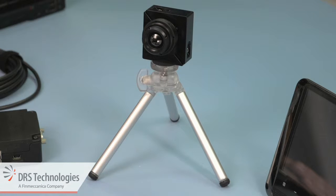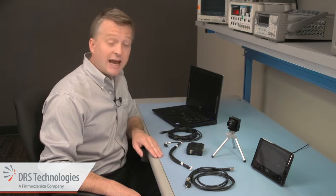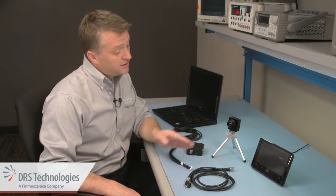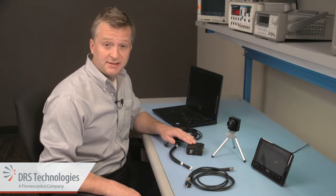We've mounted this Tamarisk 320 to a standard tripod. You'll also need a mini USB to USB cable, a camera interface cable, a coaxial cable, a monitor for analog display, and a Tamarisk breakout box.